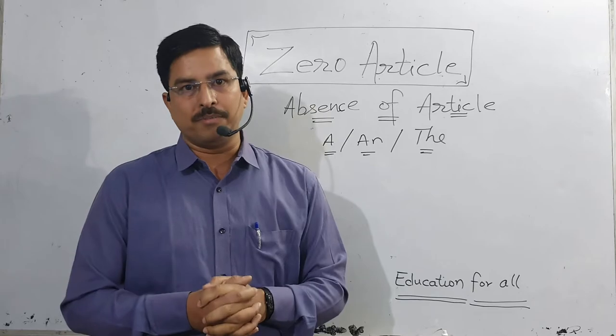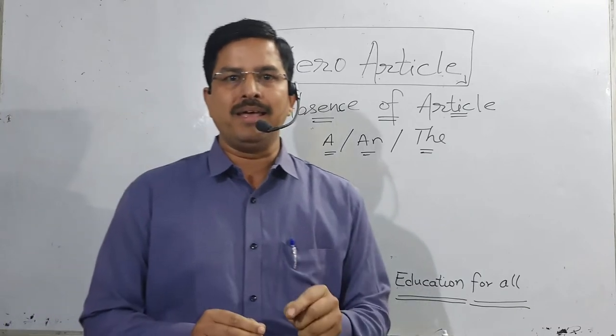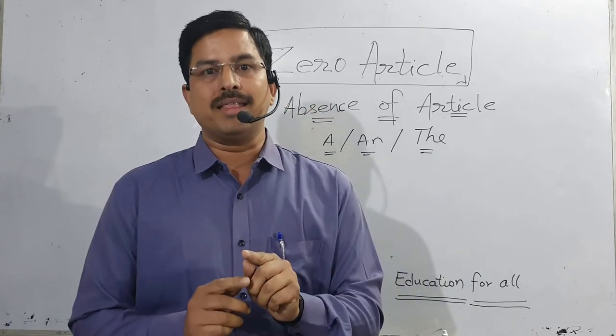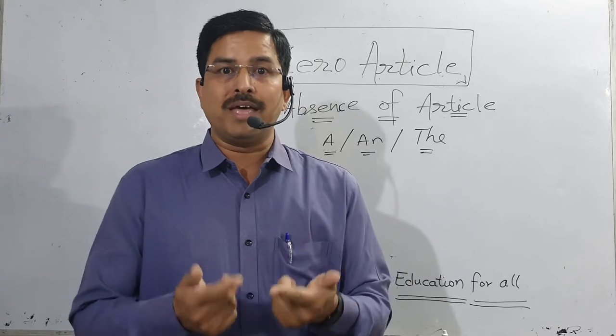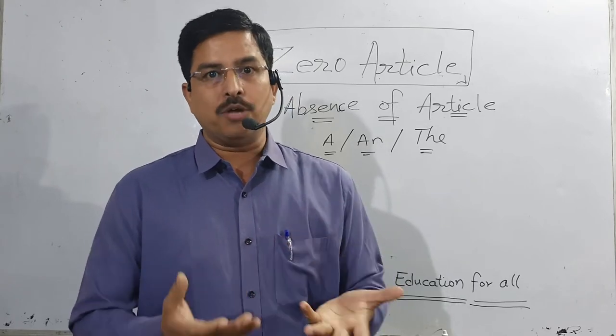Now let's move to the next slide. The next rule says: no article is used before the name of a language. This rule we have studied in the definite article video. If 'the' is placed before a language name, then its meaning changes — it refers to the people who speak that language. So if I say 'the English,' that means the people who speak English.